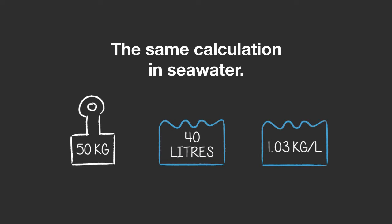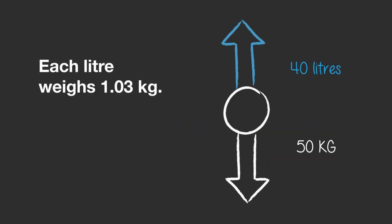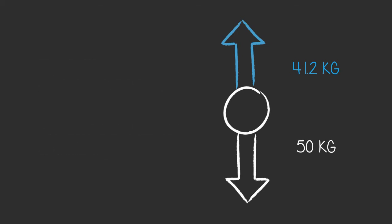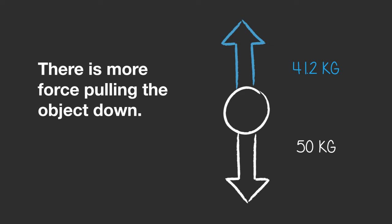Again the object weighs 50 kg and displaces 40 liters of water, but this time the weight of each displaced liter of water is 1.03 kg. Make your drawing — there's 50 kg of weight going down, that stays the same. But the weight of the displaced water pushing up: 40 liters times 1.03 kg equals 41.2 kg. The displaced water weighs 41.2 kg, so there is 41.2 kg of force pushing up.